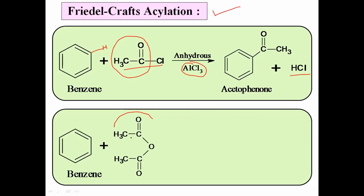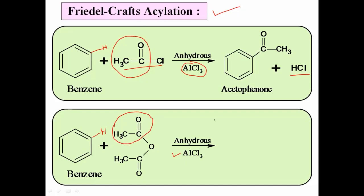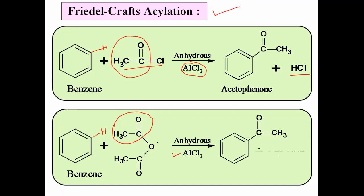When benzene reacts with acetic anhydride in the presence of Lewis Acid Catalyst, the same type of reaction occurs — hydrogen from the aromatic ring is replaced by the COCH3 group — and we get the same product, benzene-COCH3, which is acetophenone. Acetic acid (CH3COOH) is the byproduct in this case. In both cases the reaction is the same; we are just changing the reagent — first case uses acyl halide, second uses acid anhydride.